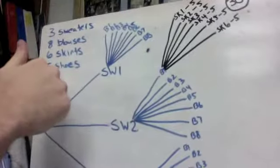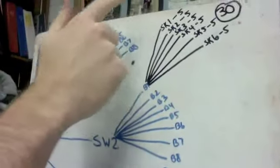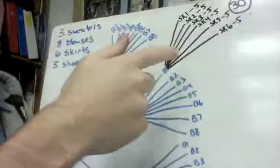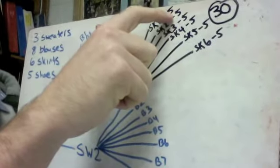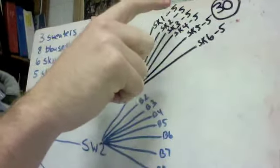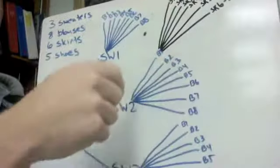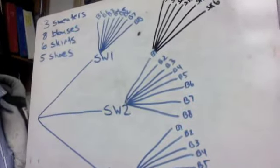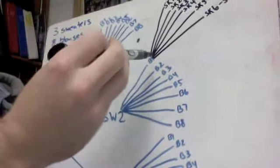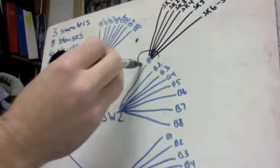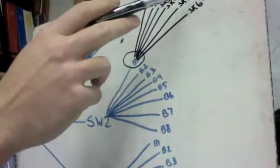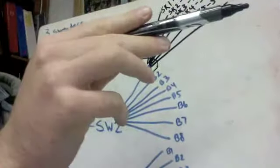So instead of listing shoe 1, shoe 2, shoe 3, I just put a 5 at the end of it saying that there's 5 different kinds of shoes. So here's how we're going to make this work and all fit on here. Basically what I'm saying is that each one of these blouses has 30 different choices going off of it.